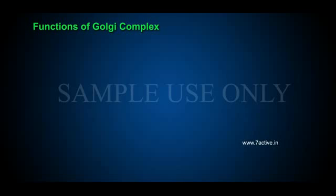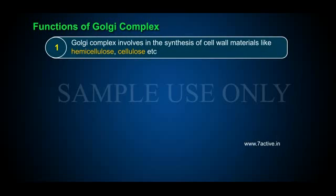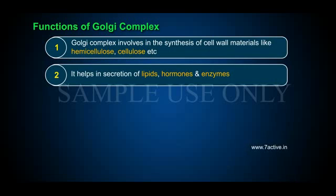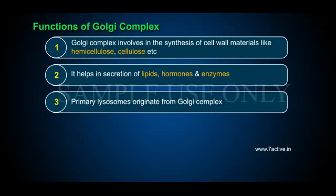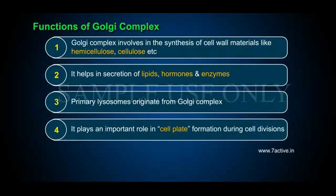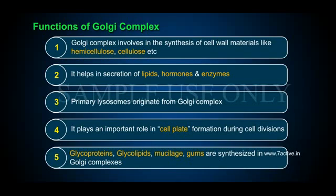The vacuoles associated with dictyosomes are considered condensing vacuoles or pre-secretory granules, and they are rich in acid phosphatase. Functions of Golgi Complex: 1. Golgi complex is involved in the synthesis of cell wall materials like hemicellulose, cellulose, etc. 2. It helps in secretion of lipids, hormones and enzymes. 3. Primary lysosomes originate from Golgi complex. 4. It plays an important role in cell plate formation during cell division. 5. Glycoproteins, glycolipids, mucilage and gums are synthesized in Golgi complexes.